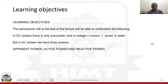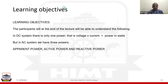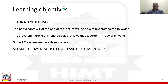We have got two systems: AC and DC. DC system has only one power, that is voltage into current — the power measured in watts. But in the AC system, we have got three powers: apparent power, active power, and reactive power.